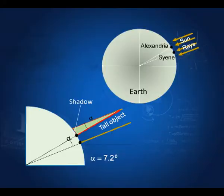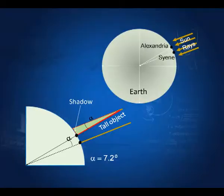At Syene the sun's rays come vertically downward, while at Alexandria they are at an angle alpha. Since alpha is known and the distance between Syene and Alexandria is known, we can determine the radius of the earth. You will be surprised to know that more than 2000 years ago, this radius was determined with quite good accuracy.